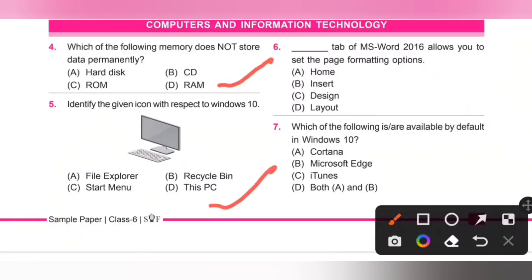Sixth one: Dash tab of MS Word 2016 allows you to set the page formatting options. Option D is the correct answer.